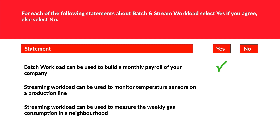Next: streaming workload can be used to monitor temperature sensors on a production line — since this is live data, stream processing is absolutely true here. The third statement says streaming workload can be used to measure the weekly gas consumption in a neighborhood — this is incorrect because weekly gas consumption is delayed data, which fits batch workload, not streaming. So we mark that as no.